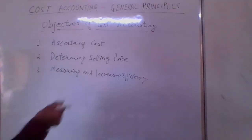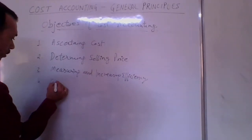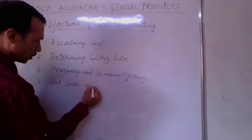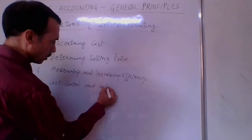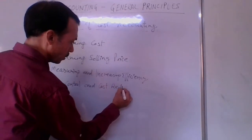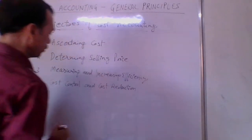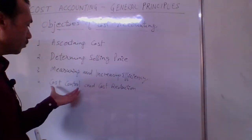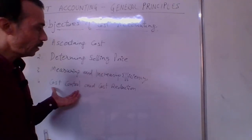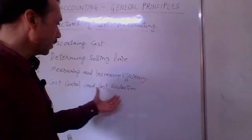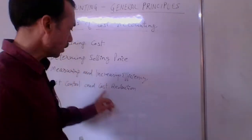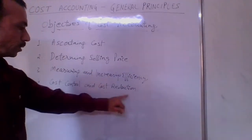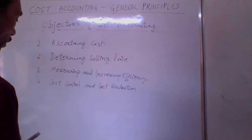The fourth objective is cost control and cost reduction. This is another very important objective. Cost reduction means we first control the cost and then continuously try to reduce it. So cost control and cost reduction is the fourth objective.